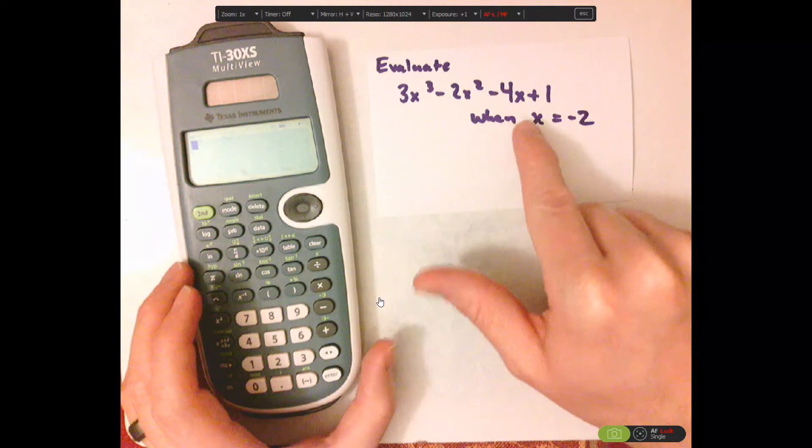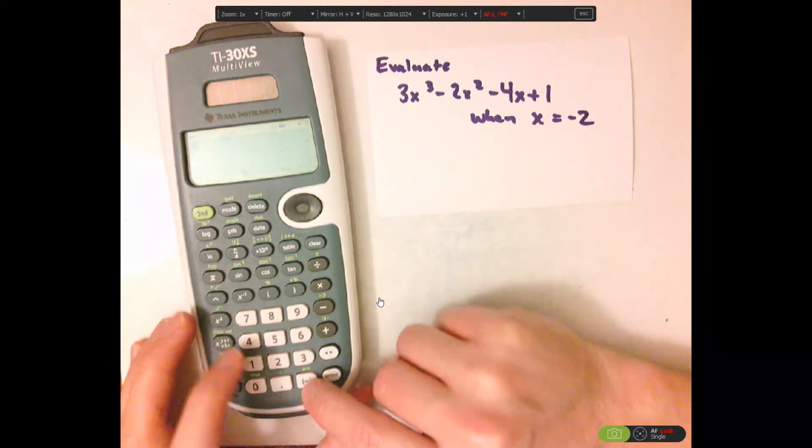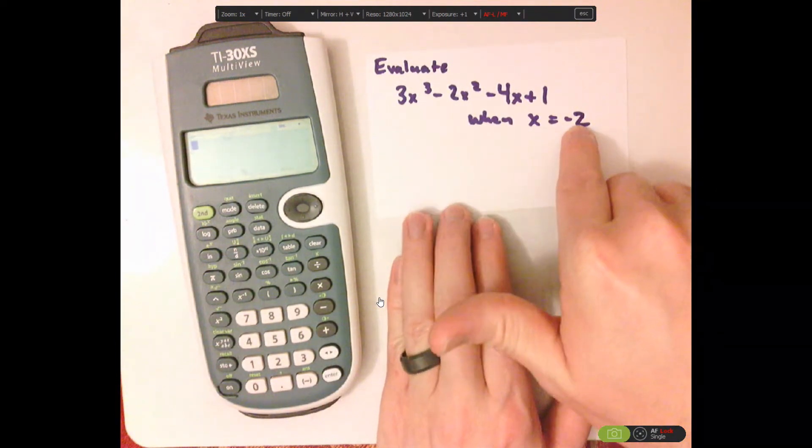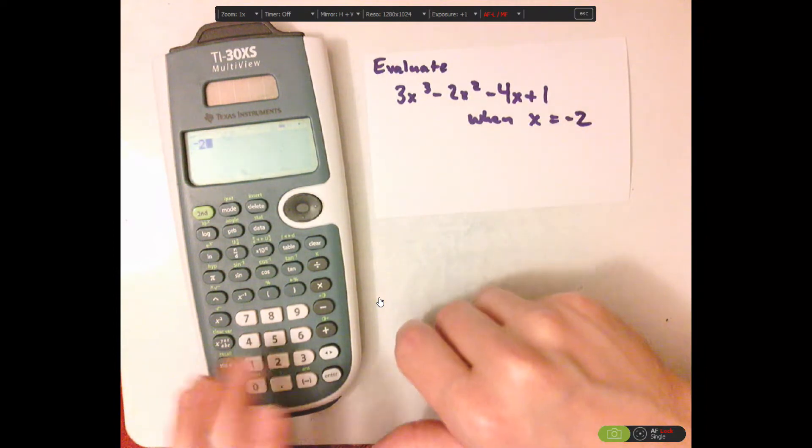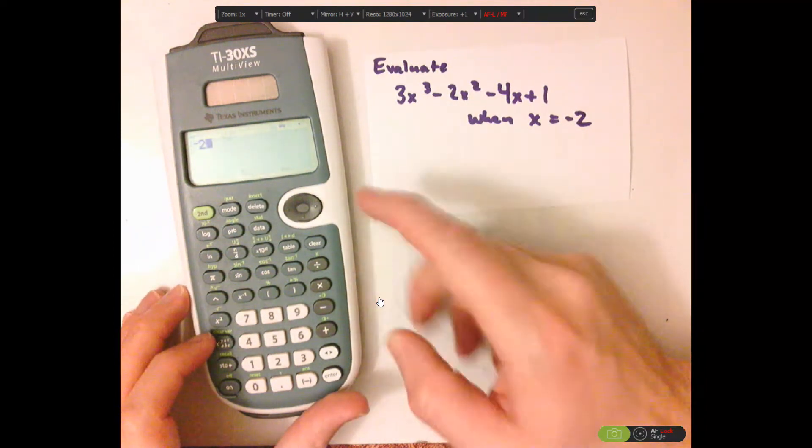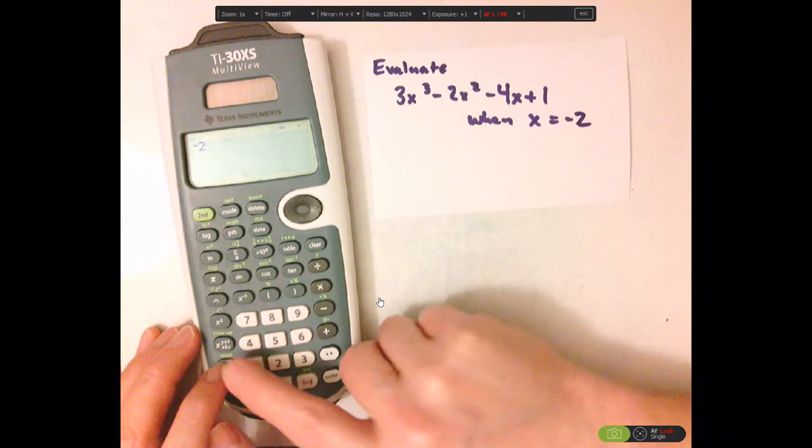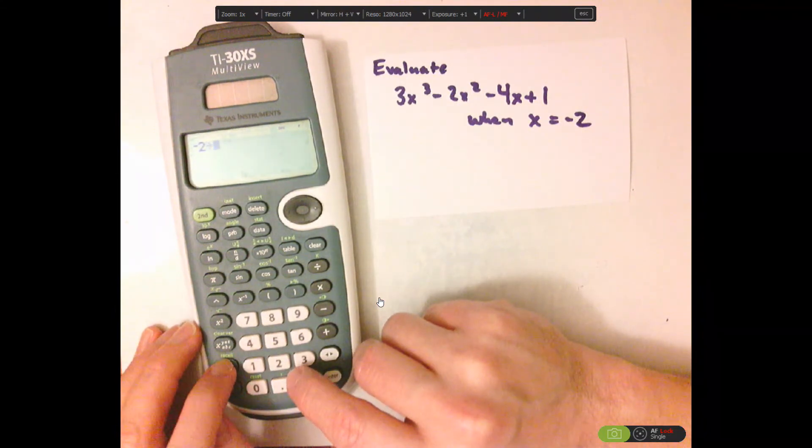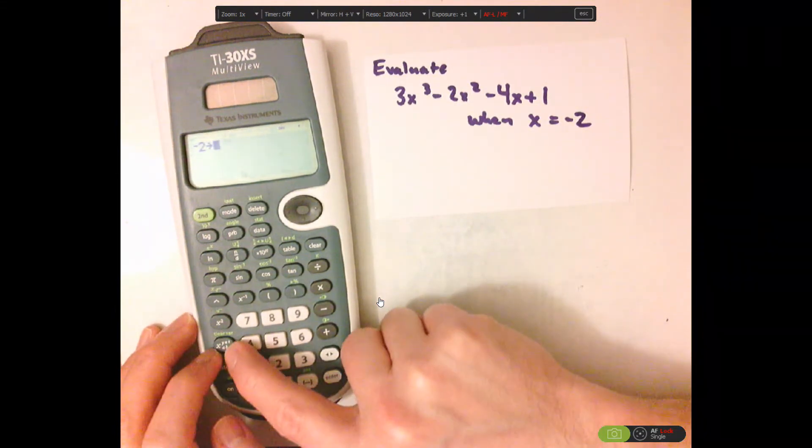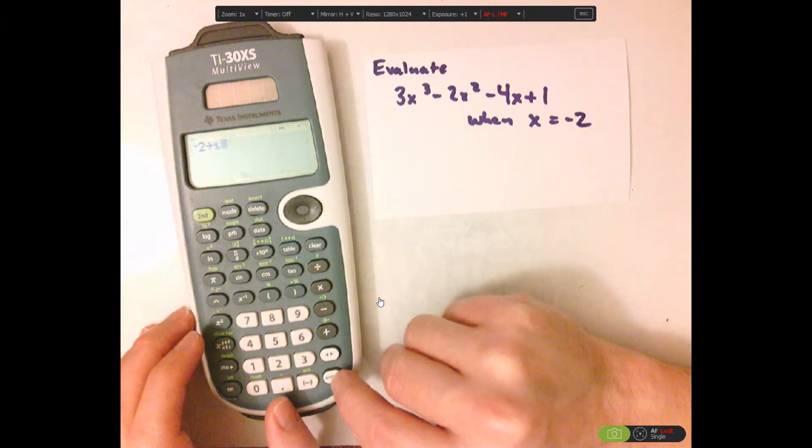The way that you're going to do that is start with x equals negative 2. So negative 2, and then we're going to use the store button, so push store, and then push the variable button, x.